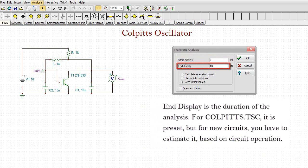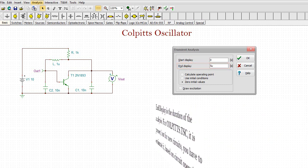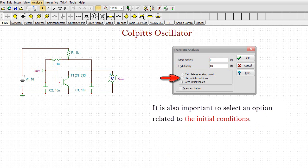For colpits.tsc it is preset but for new circuits you have to estimate it based on circuit operation. It is also important to select an option related to the initial conditions.